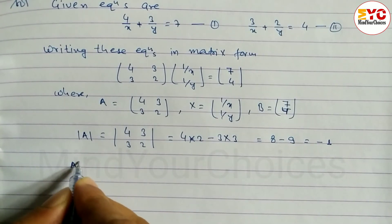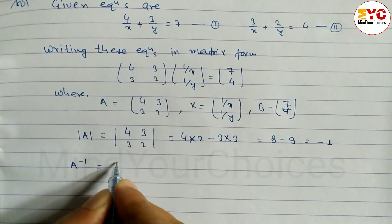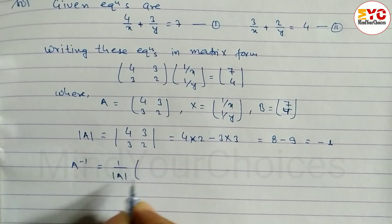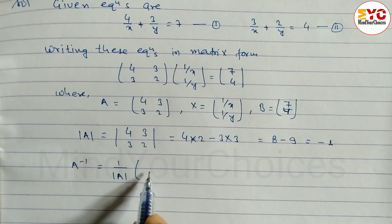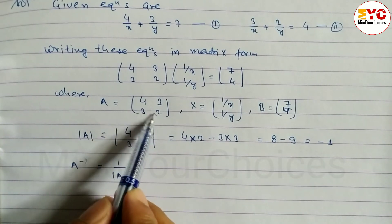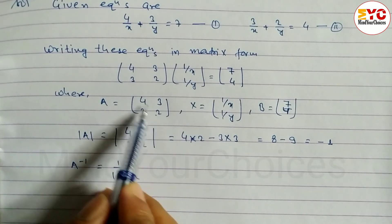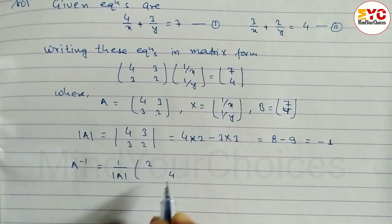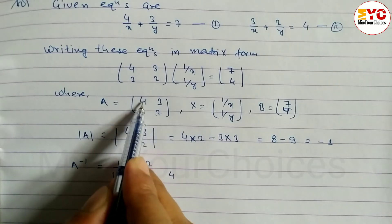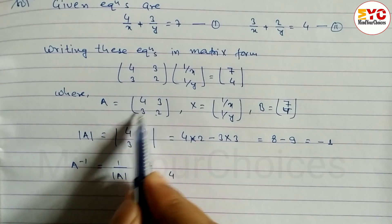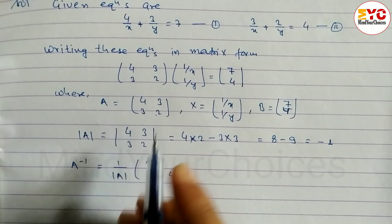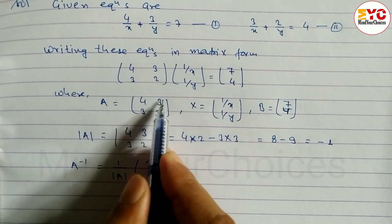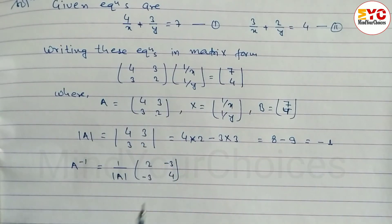After this, we have to find A inverse using the formula: A⁻¹ = (1 / det(A)) × adjoint(A). To find adjoint A, look at here — we interchange the main diagonal elements. In place of 4 we write 2, and in place of 2 we write 4. For the non-diagonal elements, we multiply by minus, so we write −3 and −3. There is no need to change the elements themselves, just multiply with minus.